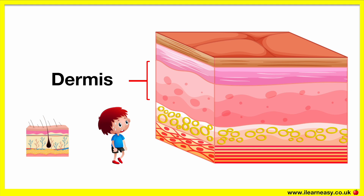The sweat glands are where sweat is generated and released through the epidermis through the pores. Sweat is important as it helps us to regulate our body temperature. For example, when you become too hot, you will sweat more so your body can cool down.